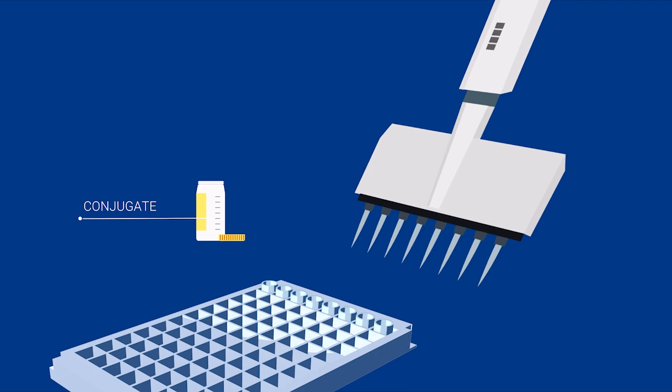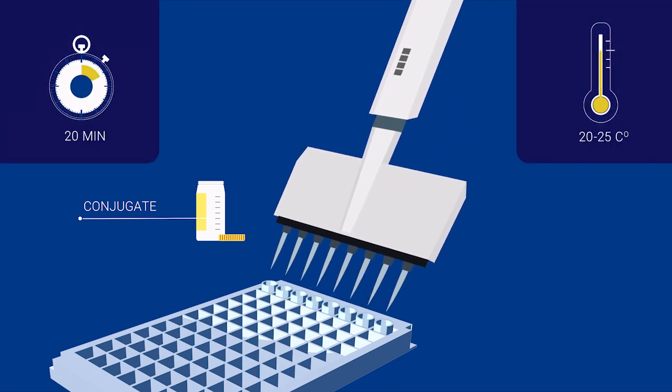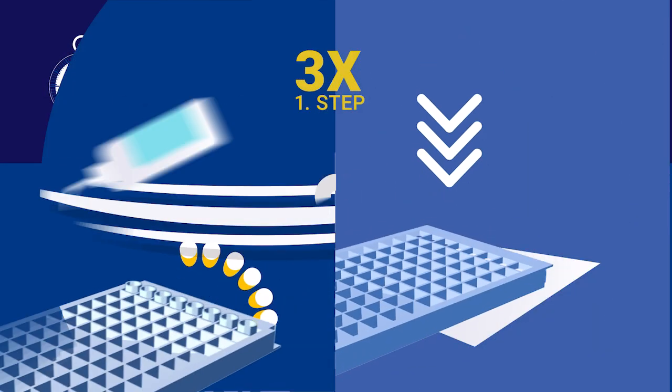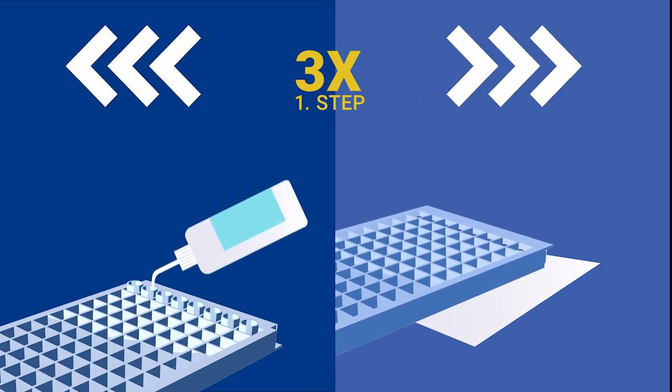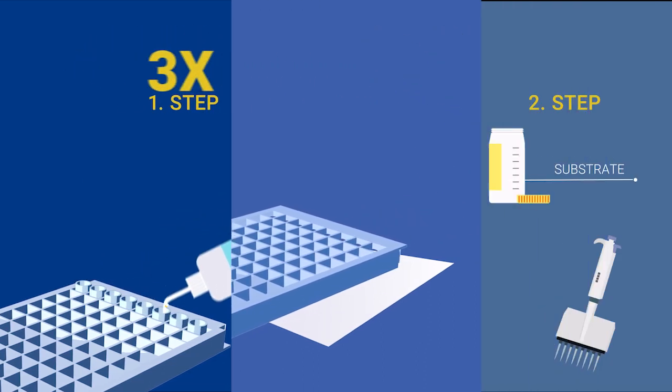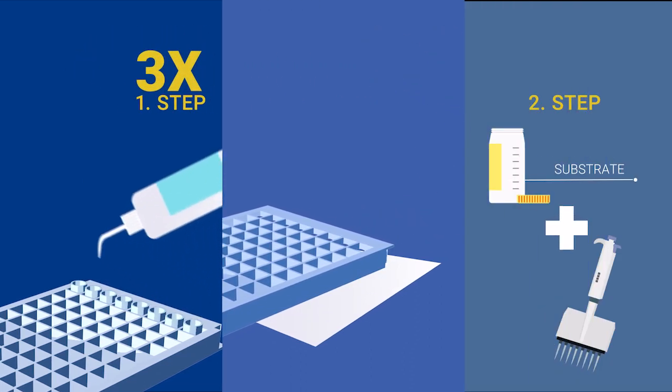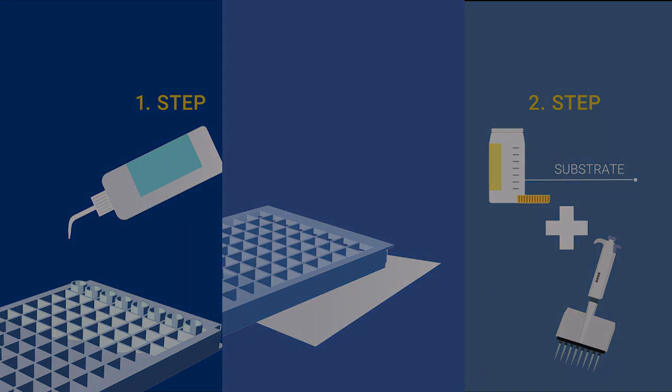Add conjugate solution into the wells and incubate for 20 minutes at room temperature. Repeat the washing step and add the substrate solution into the reaction wells. Put the plate in a dark environment for 20 minutes to allow for color to develop.